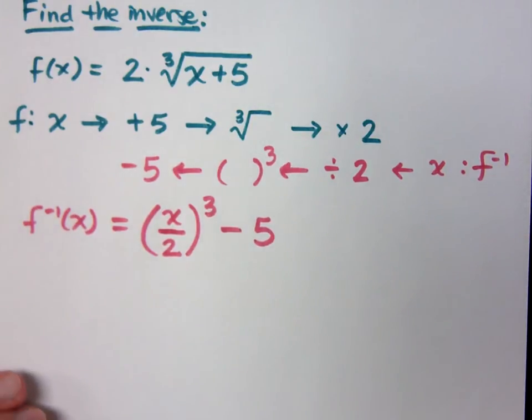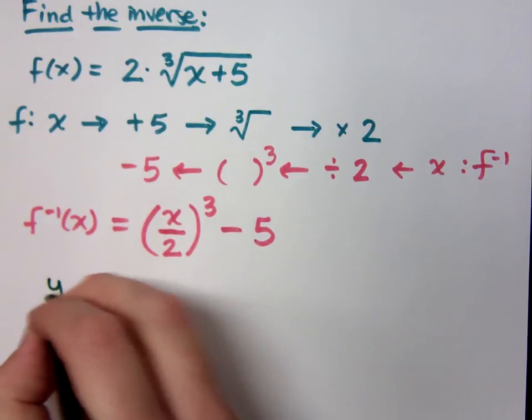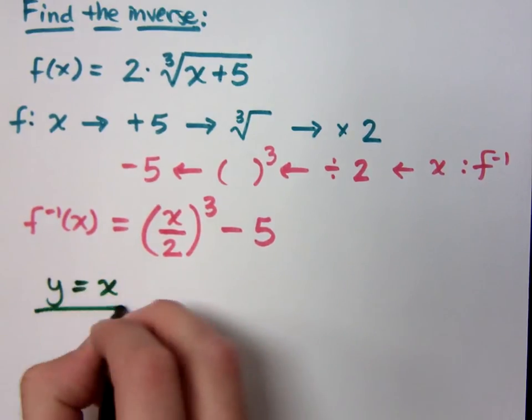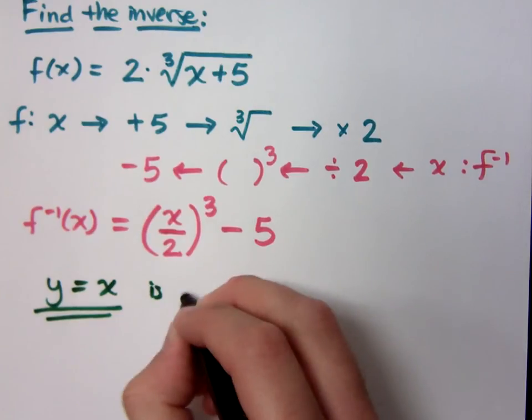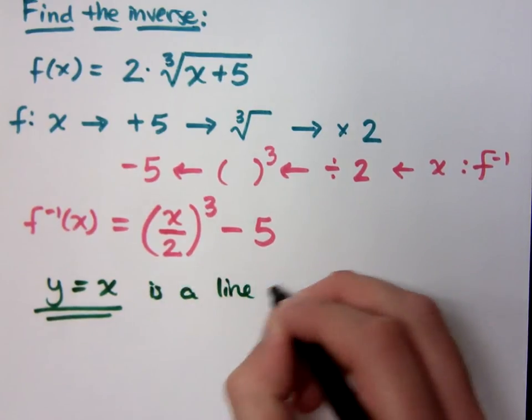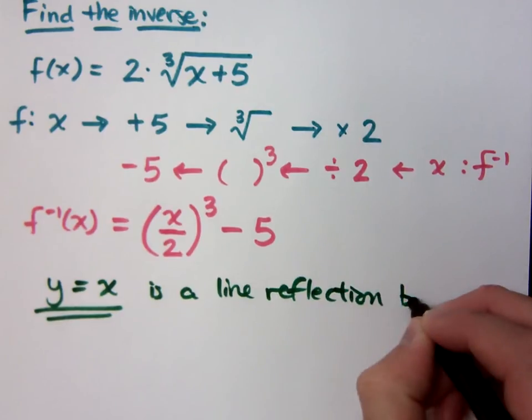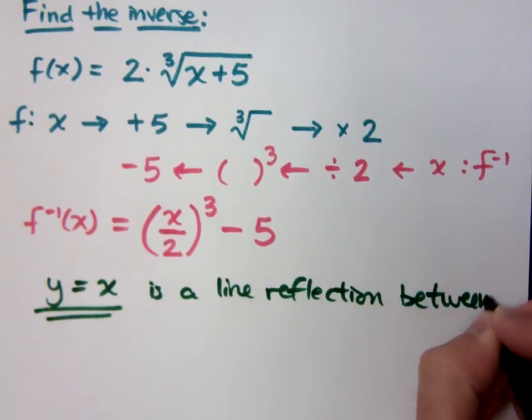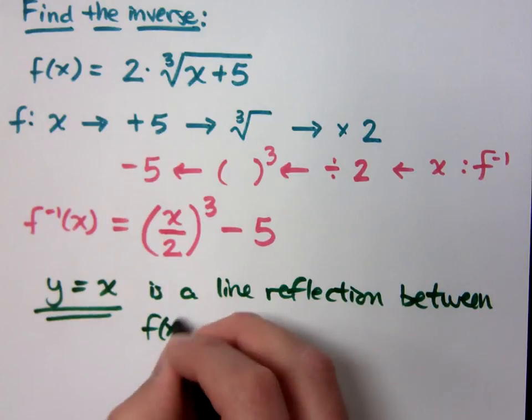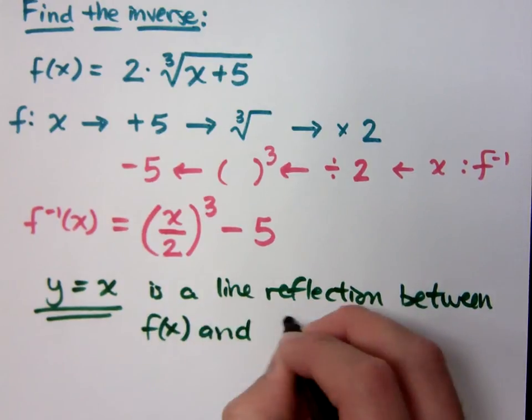I think one of the things that we had talked about before was that there was a line of reflection for the inverse. Do you remember that? y equals x is a line of reflection between f of x and its inverse.